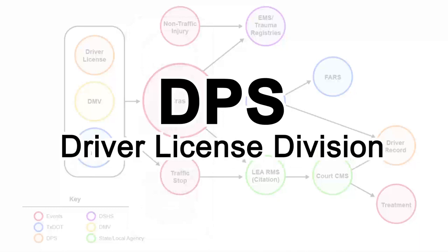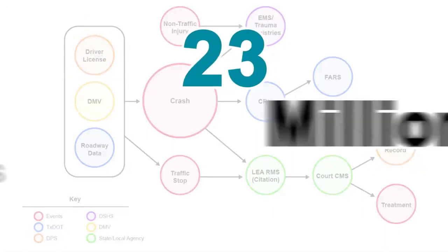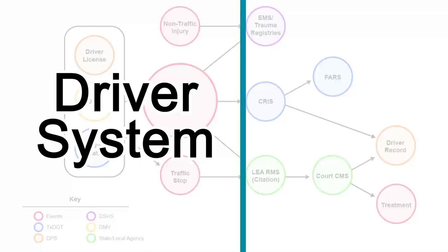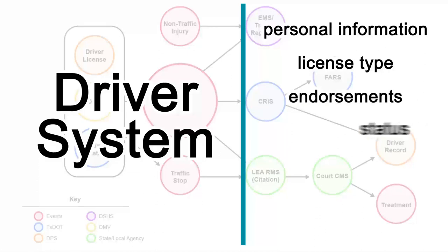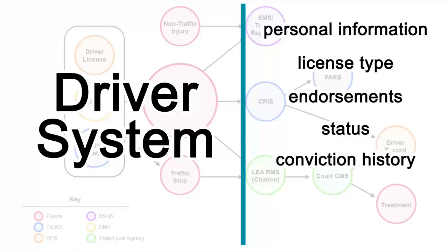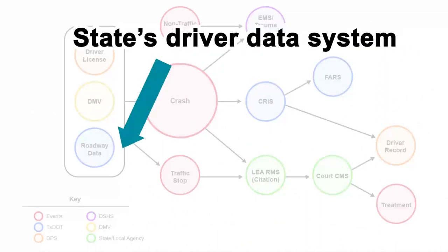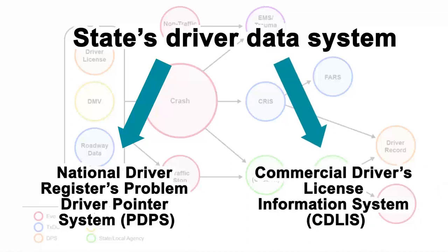The Texas Department of Public Safety, driver's license division, has custodial responsibility of the Texas driver data system, which contains nearly 23 million records. This database ensures you have up-to-date driver's license information when you have a traffic encounter. The driver's system maintains all critical information, including driver's personal information, license type, endorsements, status, conviction history, crash involvement, and driver training. The state's driver data system interacts with the National Driver Register's Problem Driver Pointer System and the Commercial Driver's License Information System.